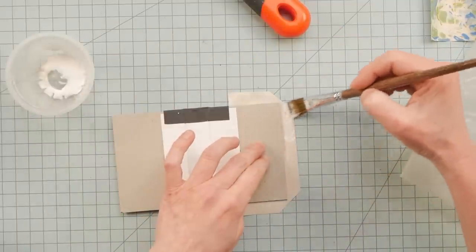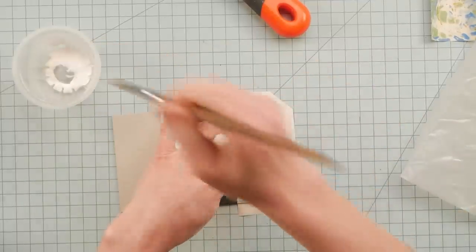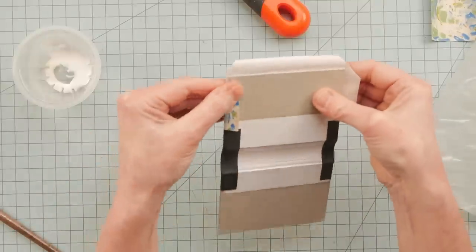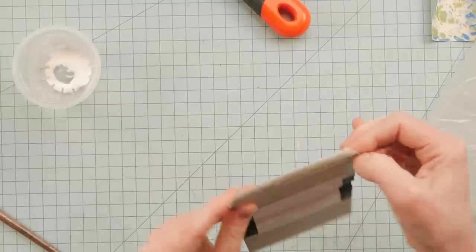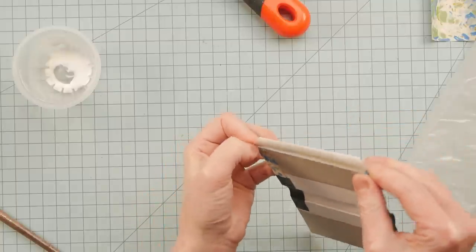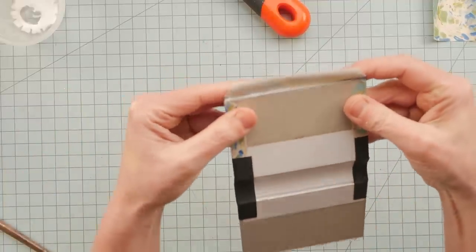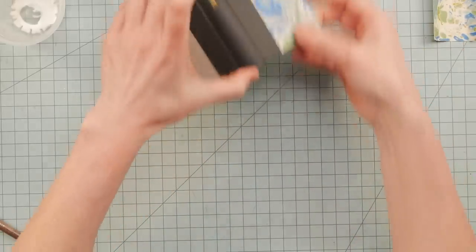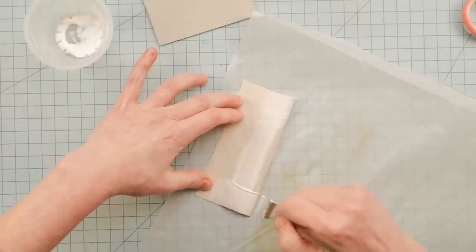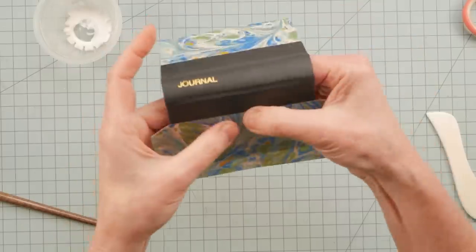I would definitely suggest using a cutting guide, but yes, I'm getting glue all over the place. Fold that over, and this one. Pinch those ends down. And then roll this over. That's the front.